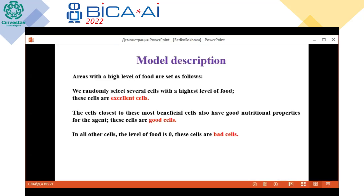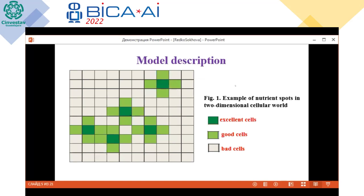The levels of food in the world are as follows. We select several cells with the highest level of food — these cells are excellent cells. The cells that are close to these excellent cells also have good nutritional properties — these are good cells. Other cells have no food, and these are bad cells. This picture illustrates an example of our world: nutritional spots in a two-dimensional world, showing excellent cells, good cells, and bad cells.